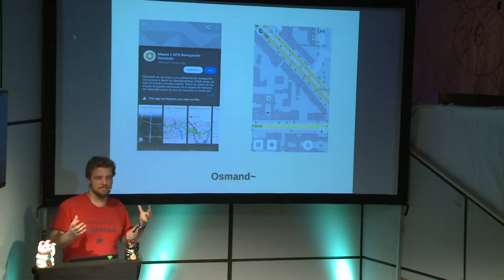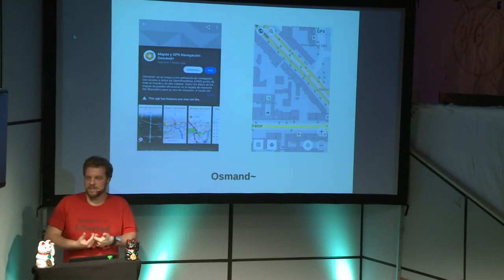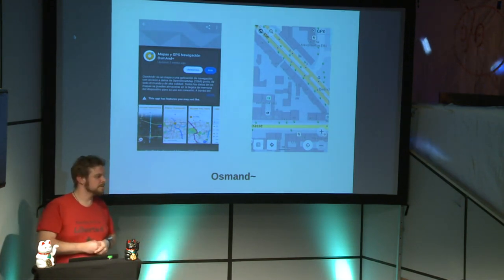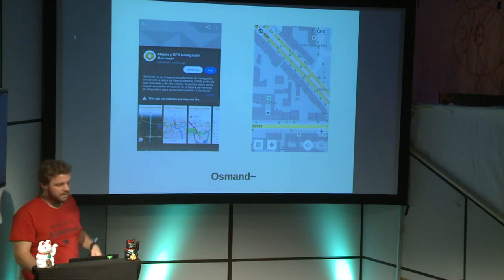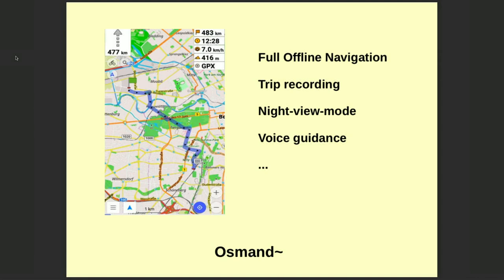The very good thing about OsmAnd is that you can download the map beforehand. I can download the map before I go to Cuba or Morocco, then I have the full map on my mobile device in flight mode with no internet needed. I have a full offline navigation system — I can go from point A to point B, record my trip, and I have all the details whether I'm a hiker or driving a car. I even have voice guidance in multiple languages, like 'next crossing turn left,' and everything works offline. I've used it for my travels for many years and it works really, really well.